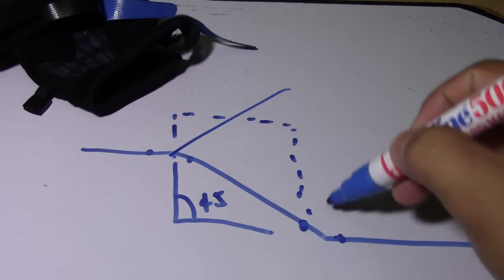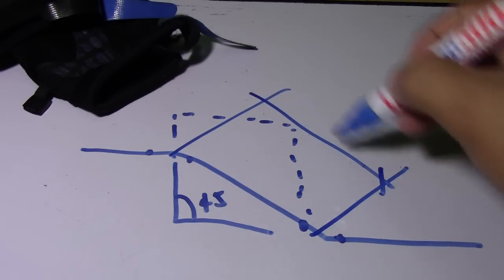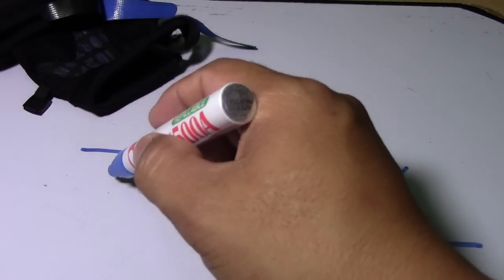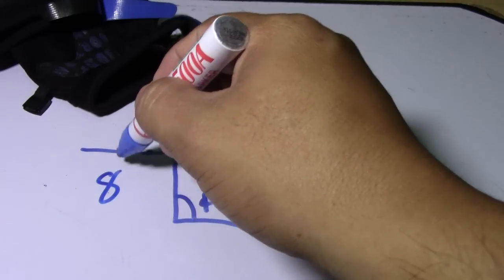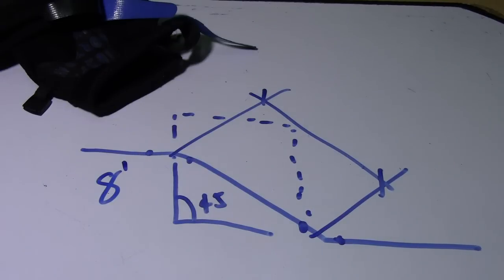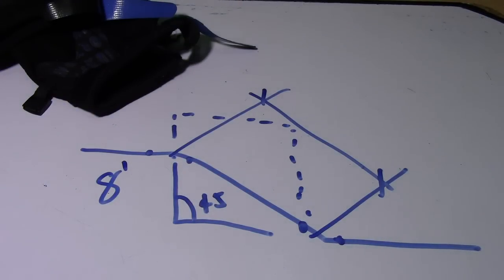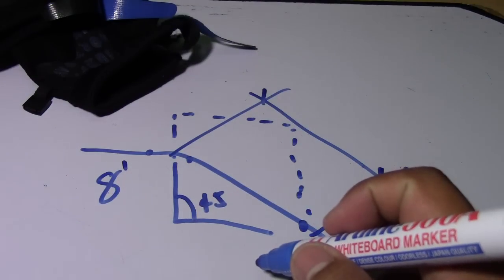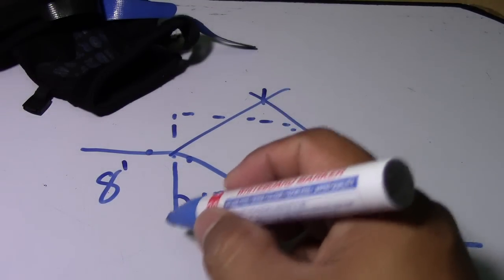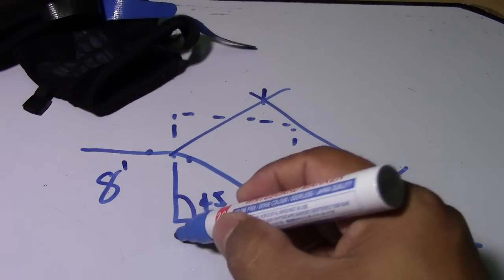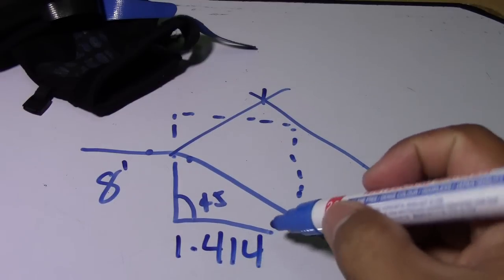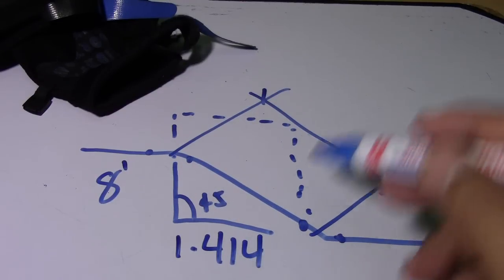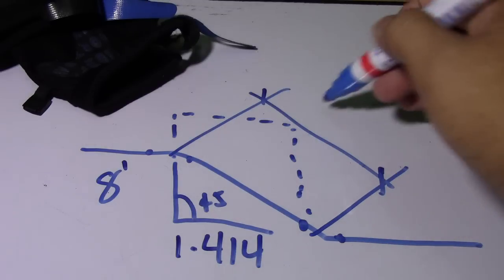We will find the center-to-center elbow. We have an 8-foot height. To find the travel, we will use 1.414. Just multiply 8 by 1.414 and the result is the travel.